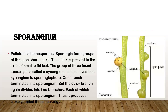Sporangium: Psilotum is homosporous. Sporangia form groups of three on short stalks, present in the axil of small bifid leaves. The group of three fused sporangia is called a synangium. It is believed that the synangium represents a branch system where one branch terminates in a sporangium, and the other branch again divides into two branches, each terminating in a sporangium, producing three closely united sporangia.